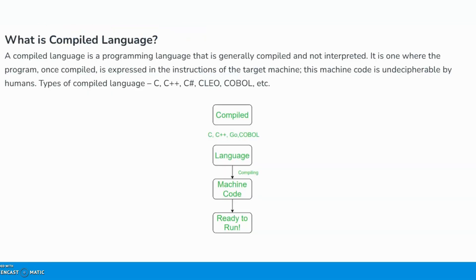First let us see what is an interpreted language, but before that, programming languages can be classified as compiled or interpreted. A compiled language is a programming language that is generally compiled and not interpreted. Examples include C, C++, Go, and COBOL. While compiling, the code is converted into machine code and it is ready to run — expressed into instructions of the target machine in a form that humans cannot understand, but is ready to run on any platform. That is a compiled language.